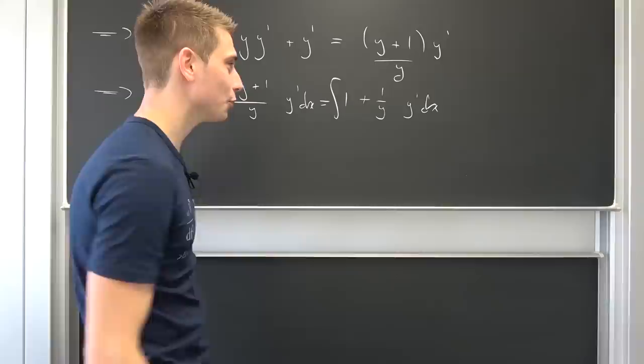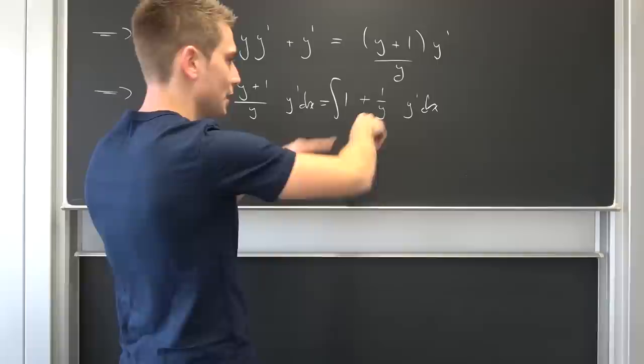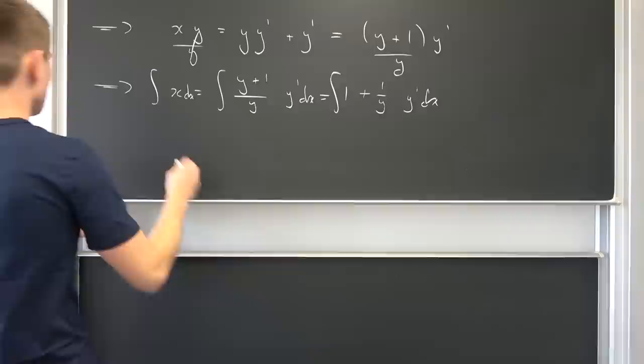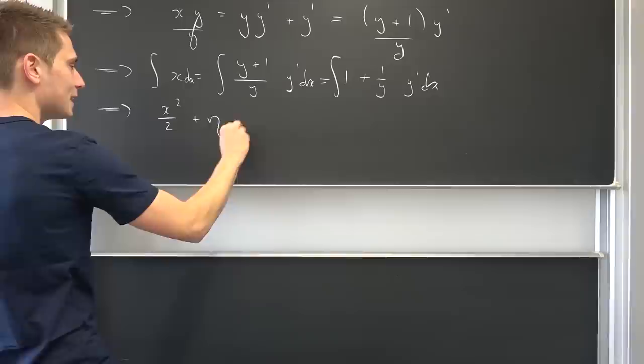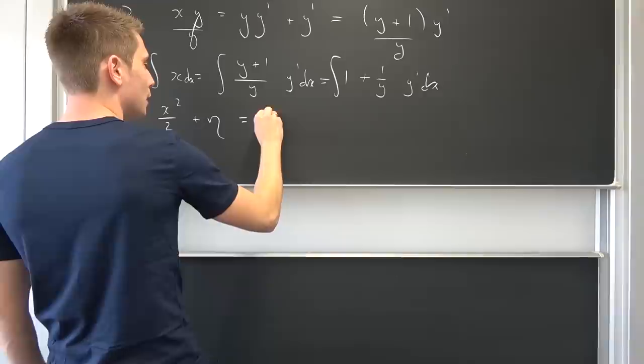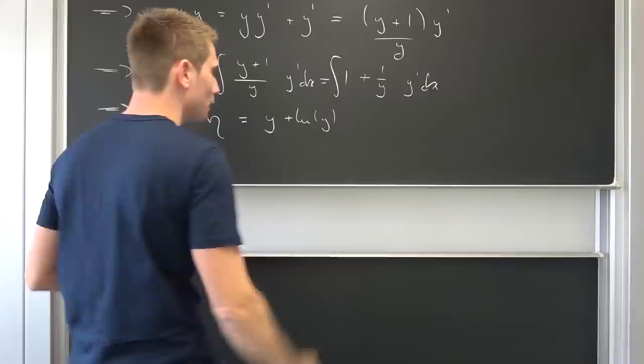We integrate both sides with respect to x. The dy/dx and dx cancel, leaving us just with dy. Then we integrate the left side with respect to y, giving us y plus the natural log of y. On the right side we get x squared over 2 plus some arbitrary constant — let's call it eta. So x squared over 2 plus eta equals y plus the natural log of y.